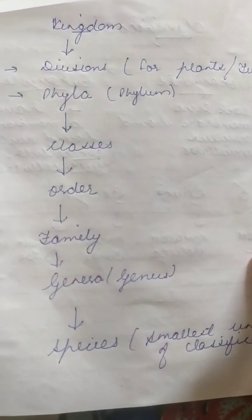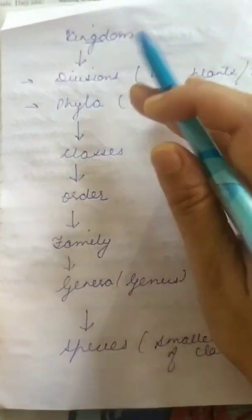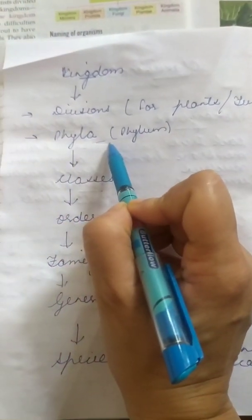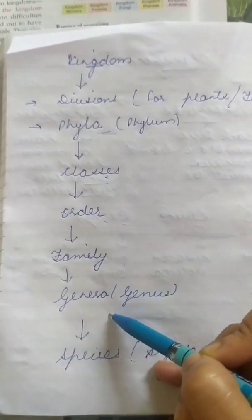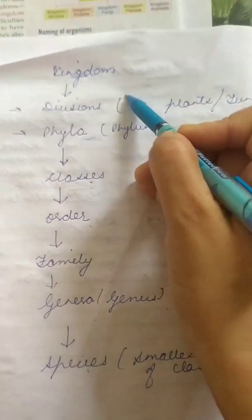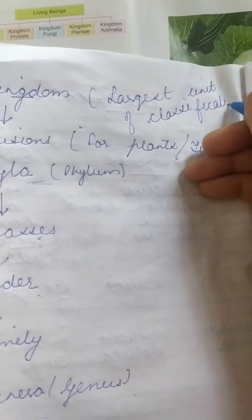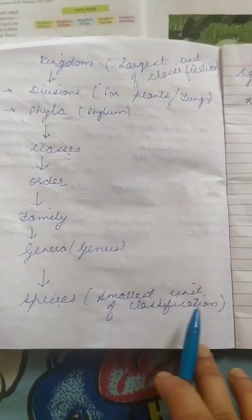Students, in the previous video we have discussed about the kingdoms. There are five kingdoms, and each kingdom is divided into divisions — specially in cases of plants and fungi — and phyla in other organisms such as human beings, then classes, order, family, genera or genus, and species. Kingdom is the largest unit of classification and species is the smallest unit of classification.